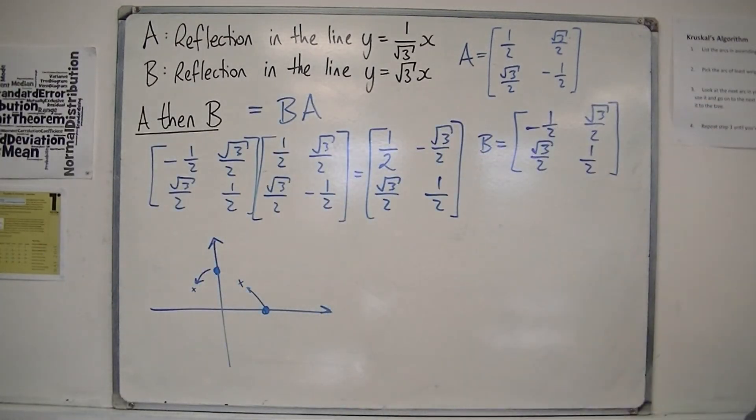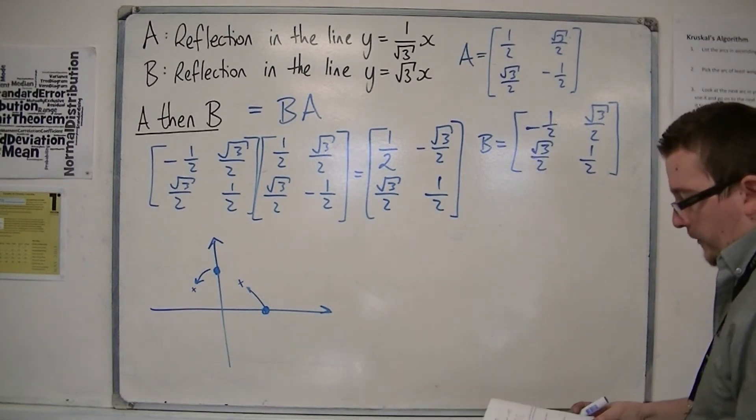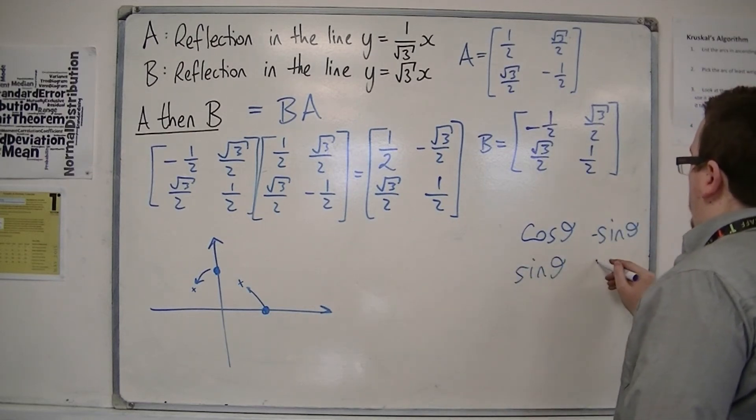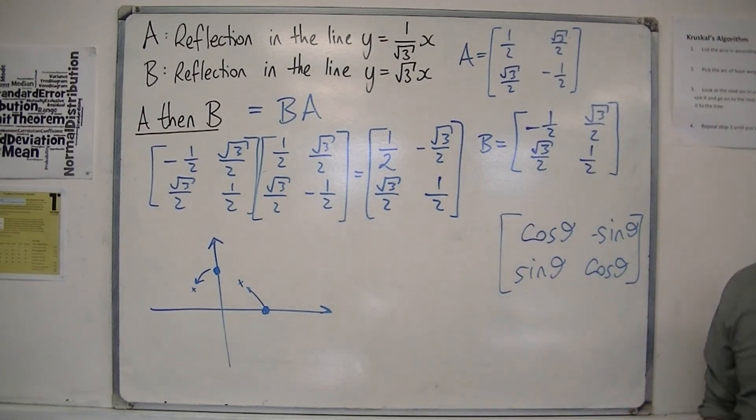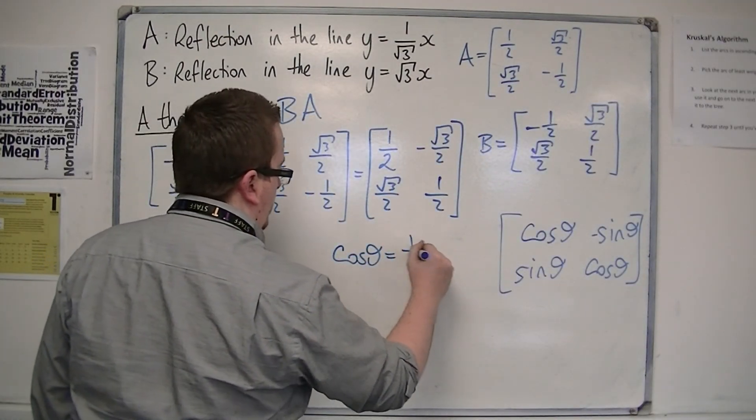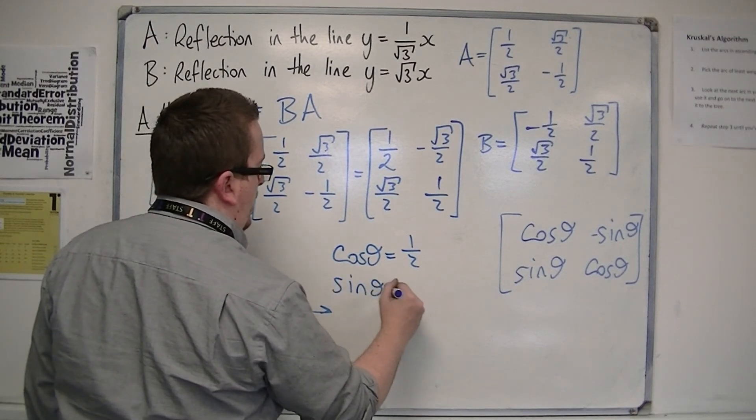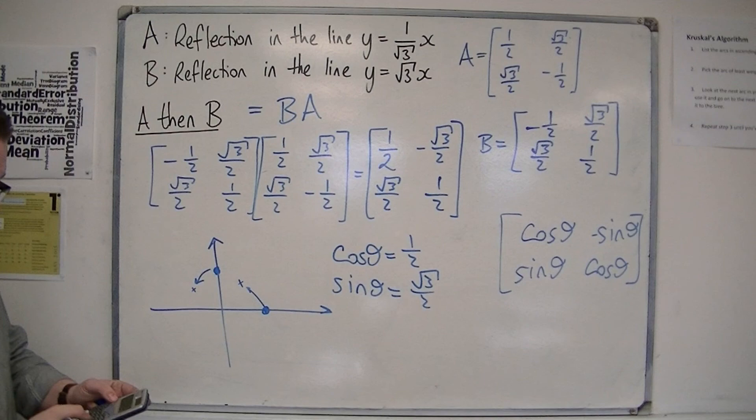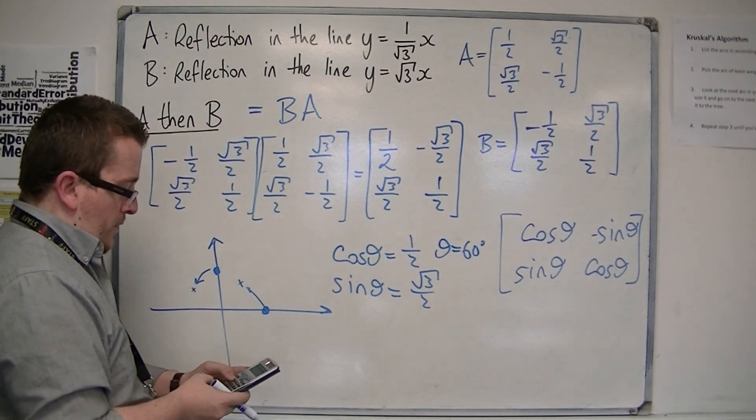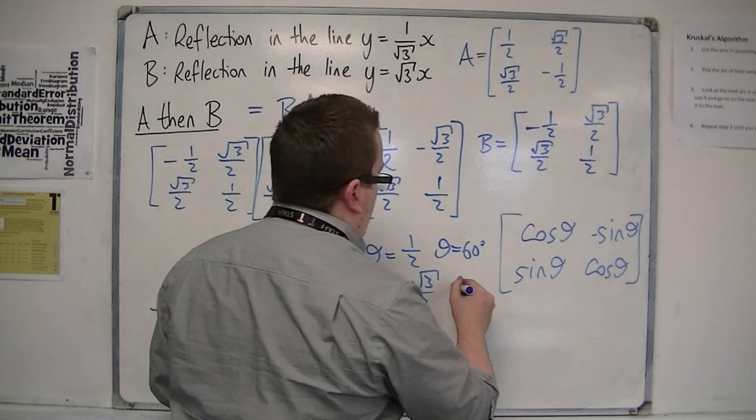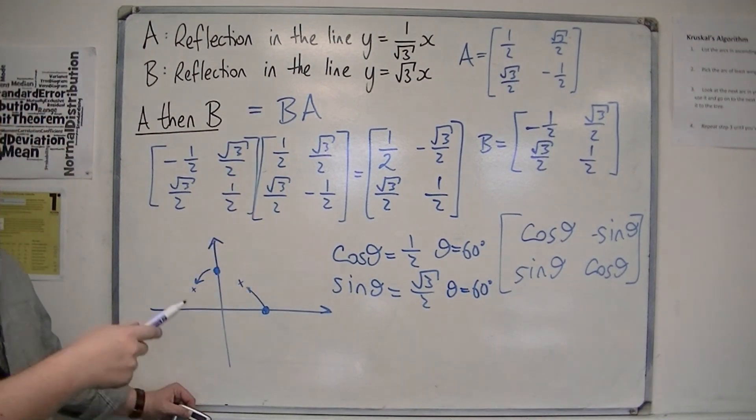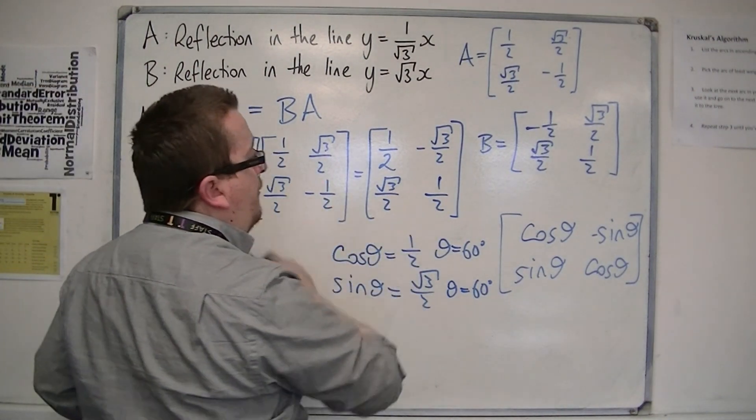This must be a rotation. I can compare that with the rotation matrix, which was cos theta, sin theta, minus sin theta, sin theta, cos theta. That's in the formula booklet as well, same page as the last one. That would infer that cos theta is 1 half. Sin theta is root 3 over 2. Inverse cosine of 1 half is 60 degrees. This must be a rotation anticlockwise by 60 degrees about the origin. That defines that matrix.